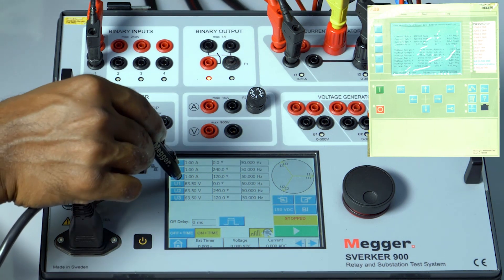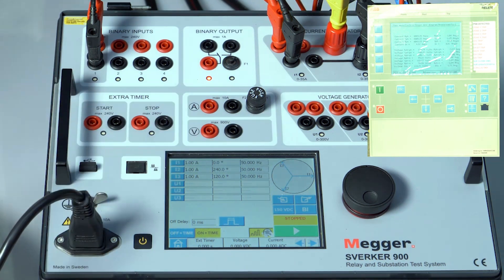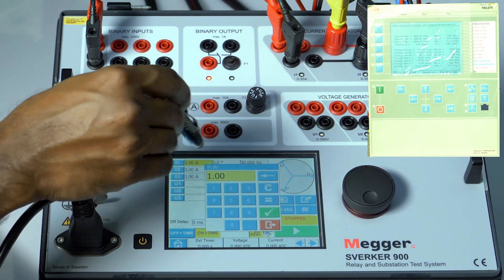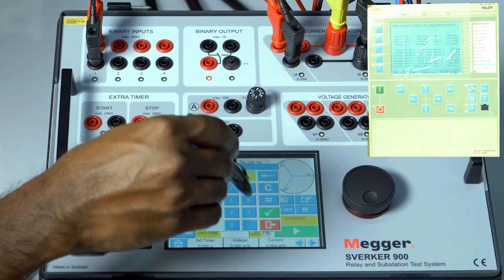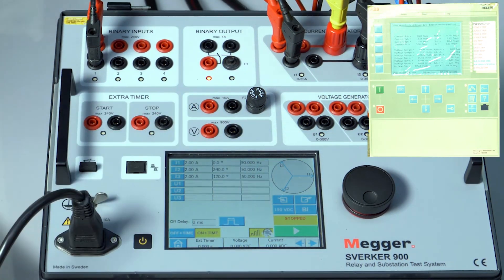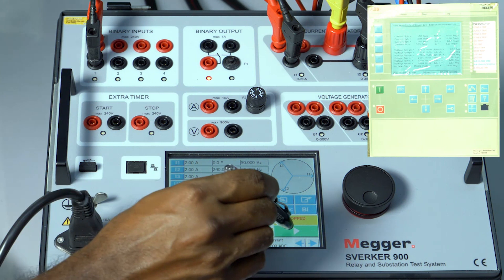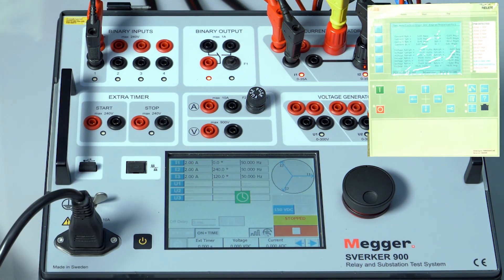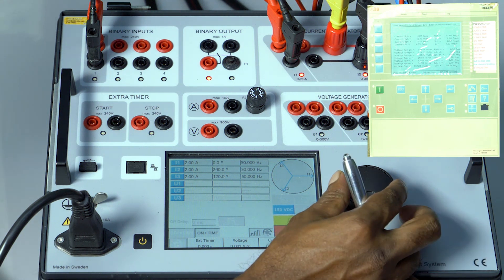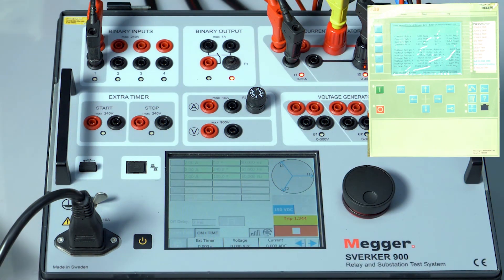Let me configure 2 amps in all the phases. Press the play button. Now the current will not be injected by pressing this knob. 2 amps are injected and the relay is waiting for the trip. So approximately 10 seconds we should receive feedback and it's a trip. So 10 seconds it has operated.